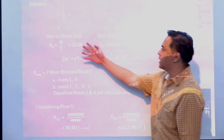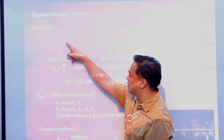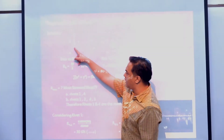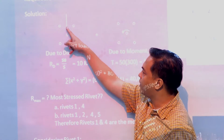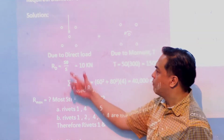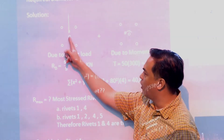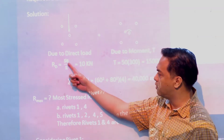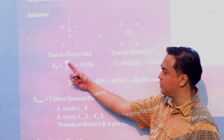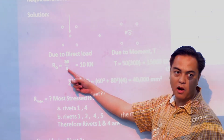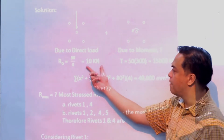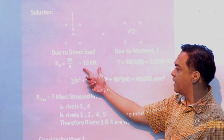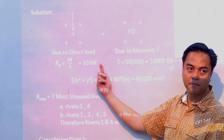First, I simply place the concentrated load directly at the center of the group of rivets. With 50 kilonewtons applied there, the shear force on each rivet would be 50 kilonewtons divided by 5 pieces of rivets, giving each rivet 10 kilonewtons shear force directed upward.